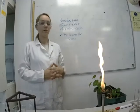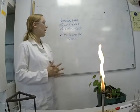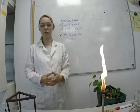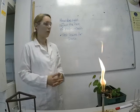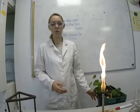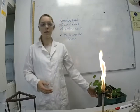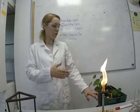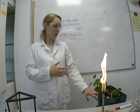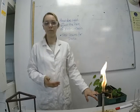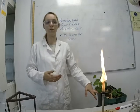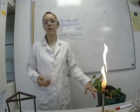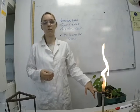Today we're going to be investigating the question: how does light affect the rate of photosynthesis? The way you're going to do that is by testing for starch. I have two plants — one that's been kept in the light and one that's been kept in the dark. You need to make a prediction as to which one you think is going to show more starch and give a scientific reason for your prediction.